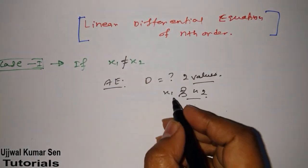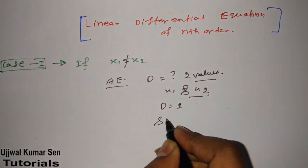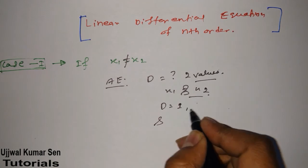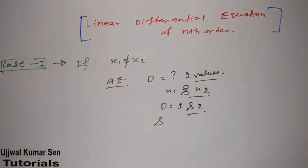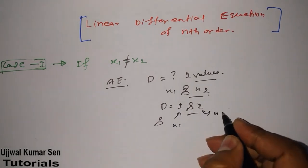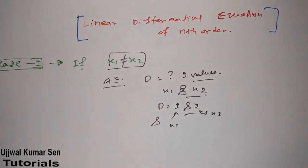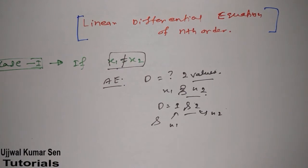For example, if d equals 1 and 2, that means x1 is 1 and x2 is 2 — so x1 is not equal to x2. We will start from that case, and then move on to x1 equal to x2 equal to x3 and so on.